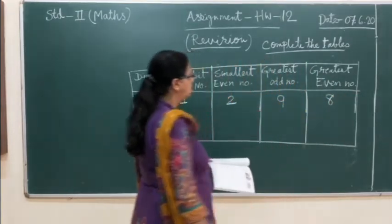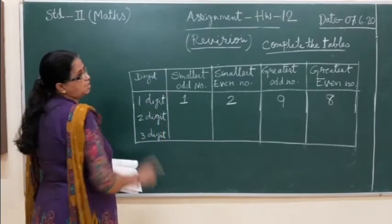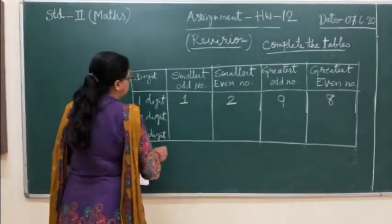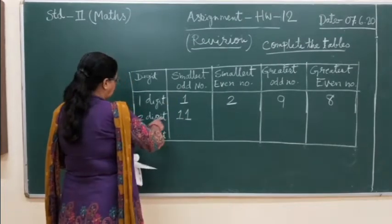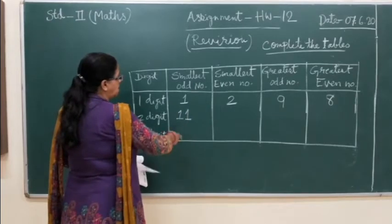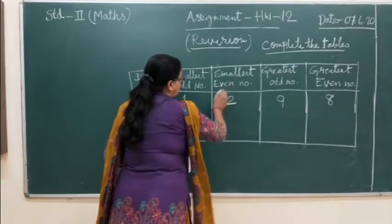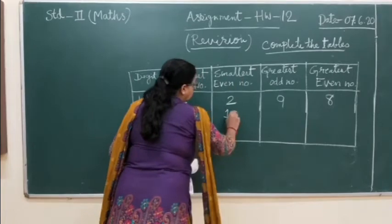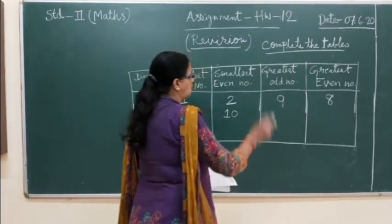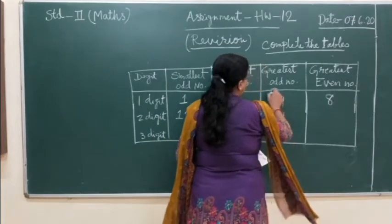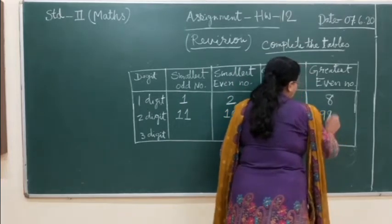Now 2 digits. Smallest odd number: the smallest 2-digit number is 10, but that is even, so we need the next number, 11. Smallest even number is 10. Greatest odd number: 99. Greatest even number: 98.